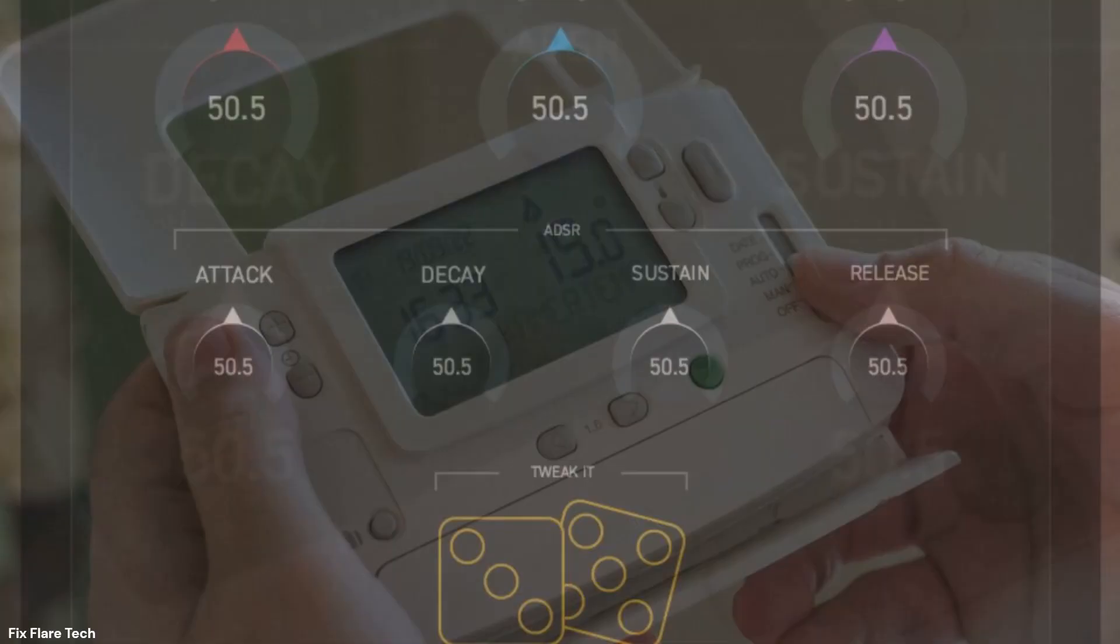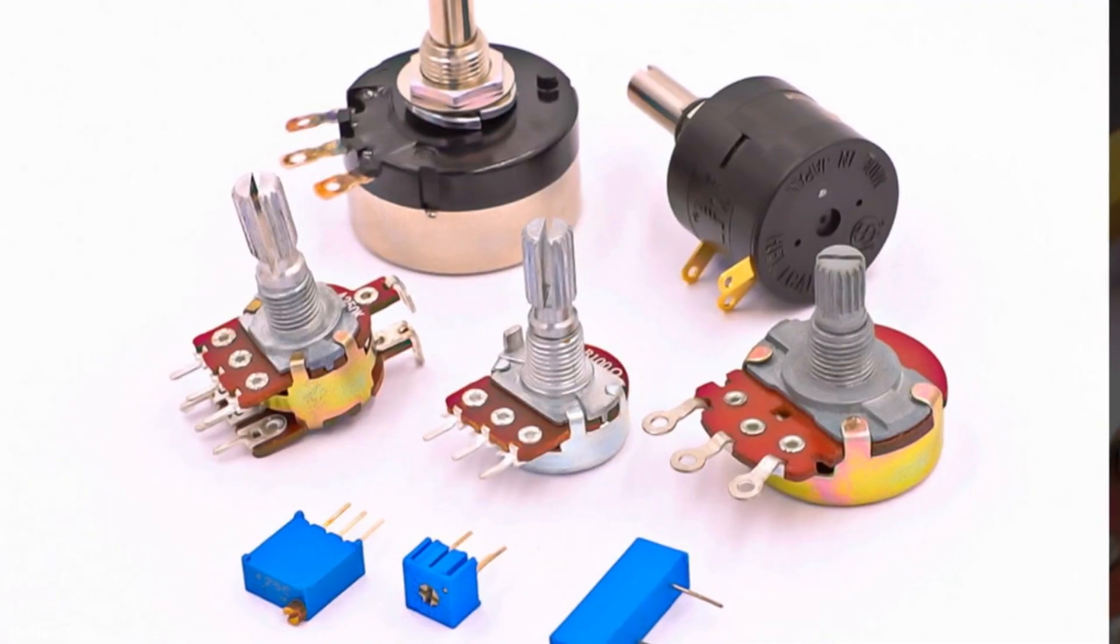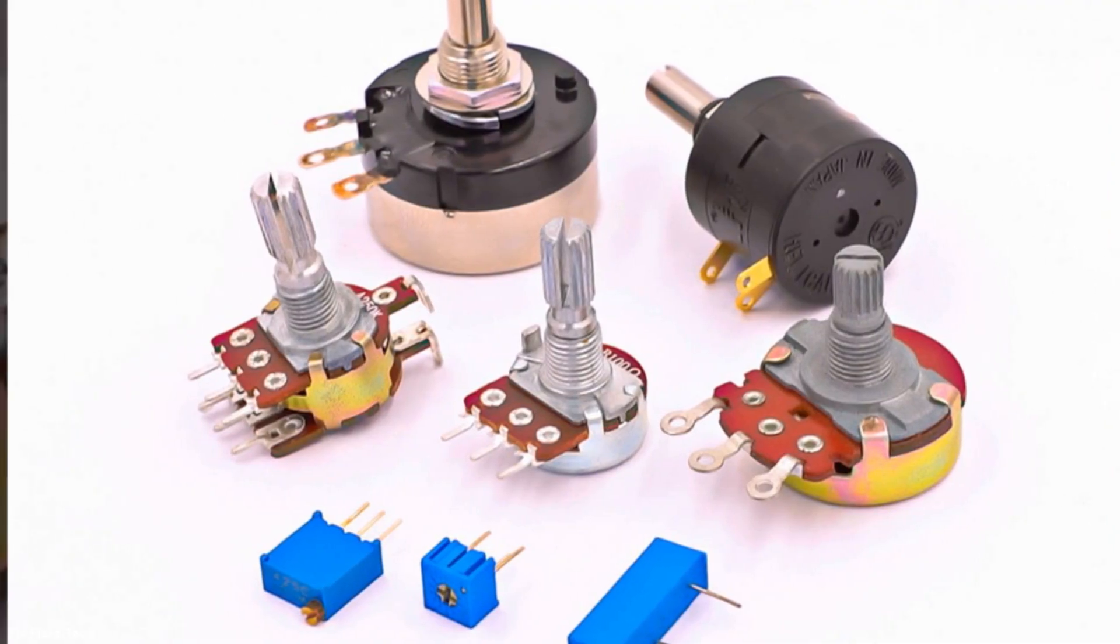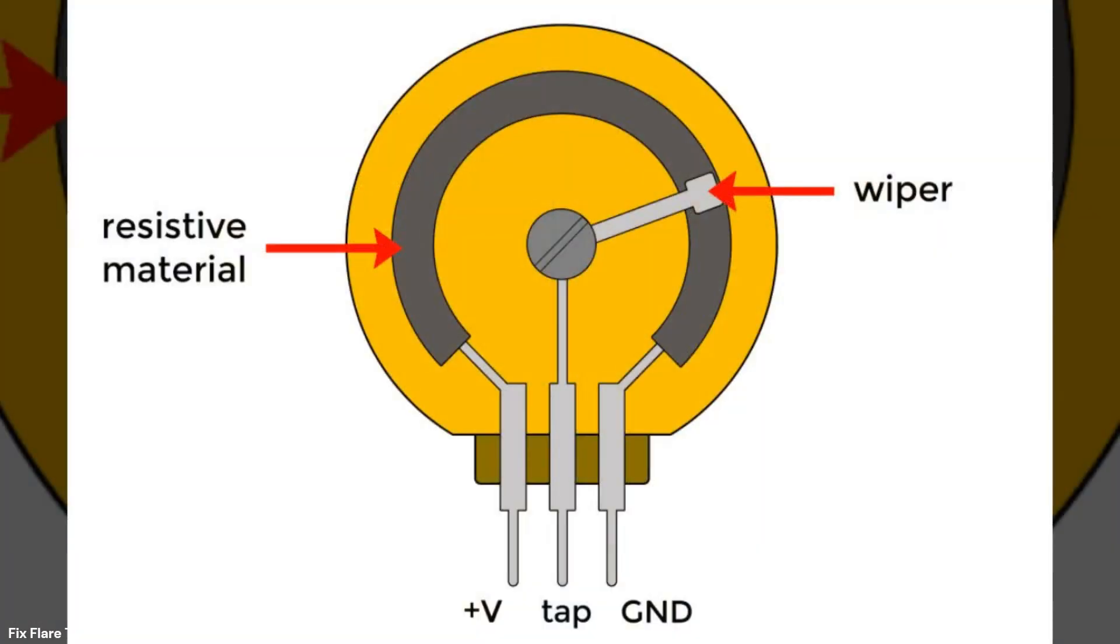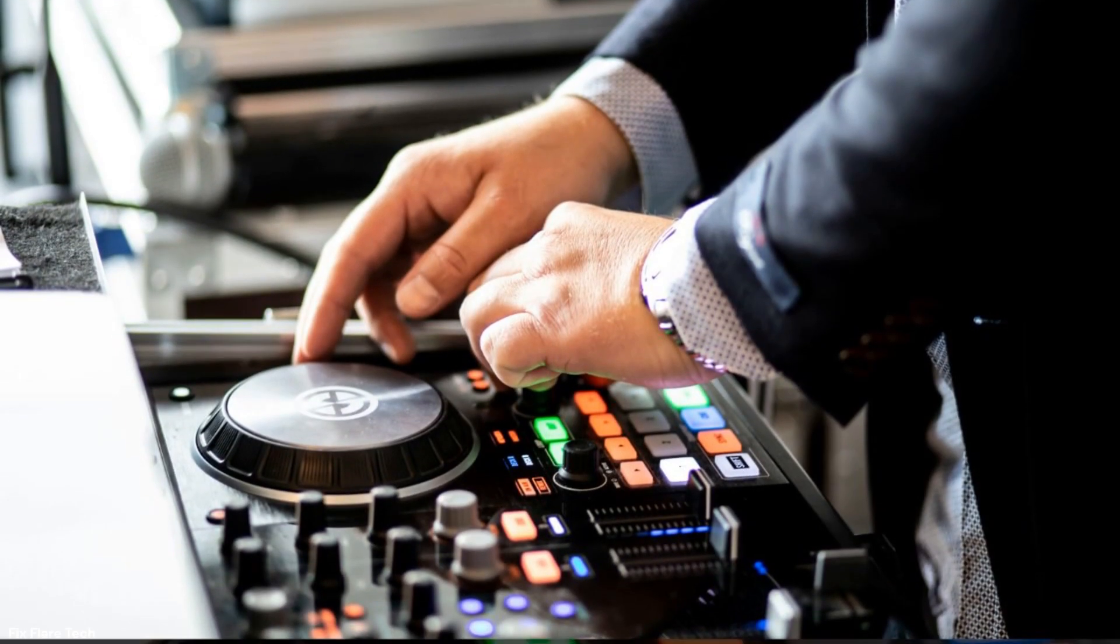Sure, a potentiometer is a simple concept. It's a three-terminal resistor with a sliding contact that forms an adjustable voltage divider. If all three terminals are used, it acts as a variable resistor or rheostat. But what happens when we bring digital control into the mix?